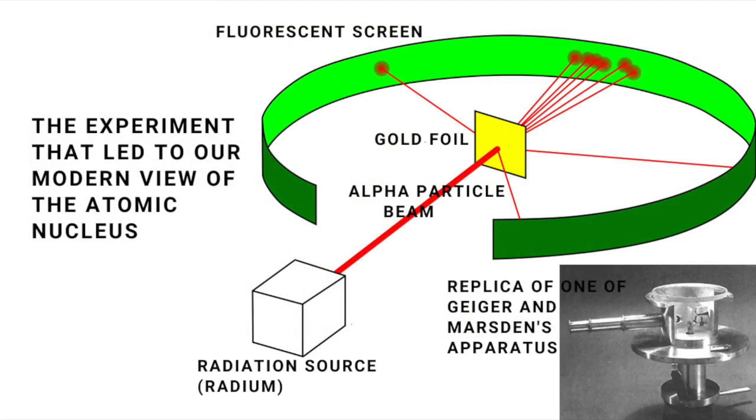Alpha particles had been identified and named, they were called alpha rays to begin with, a decade earlier by Rutherford, as one of the types of radiation given off by radioactive elements such as uranium. Being fast moving and positively charged, Rutherford reasoned they'd serve as a good probe of the atomic structure of matter.